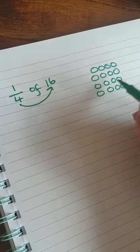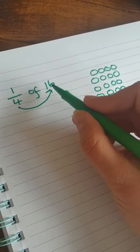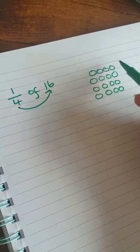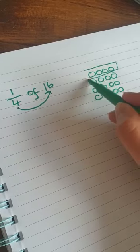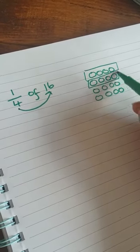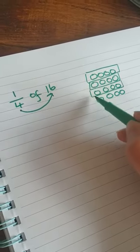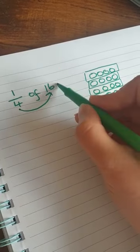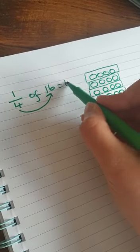How many groups of four did it take to get to 16? One group. I'm going to put a box around it. One, two, three, four. So one quarter of 16 is four.